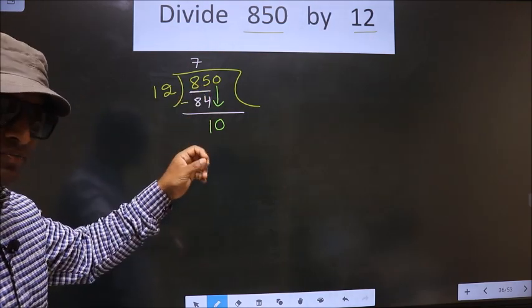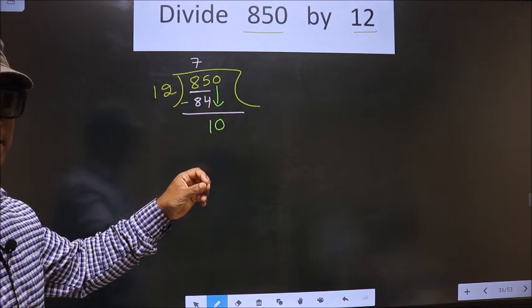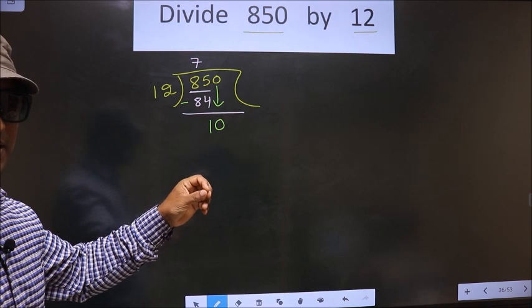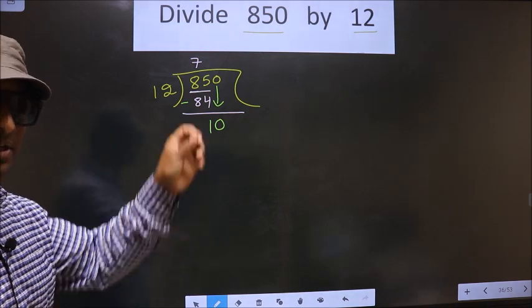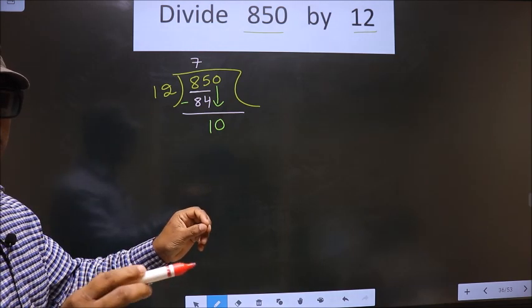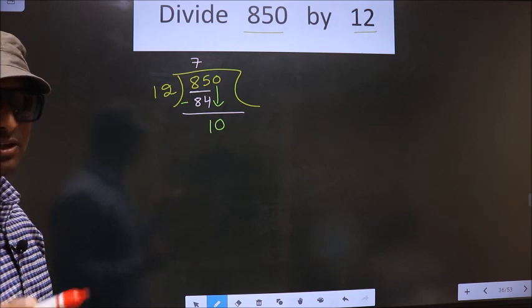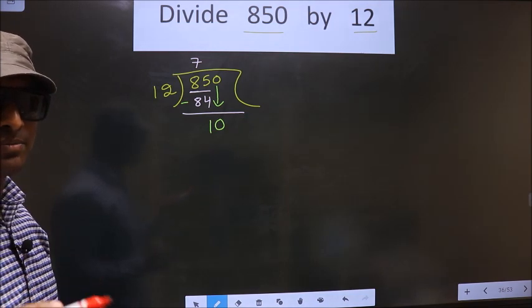And in the same step, you want to put a dot and take zero? I repeat, in the same step you brought the number down and also put a dot and take zero. Both you cannot do in the same step, which is wrong. You are not supposed to do that.